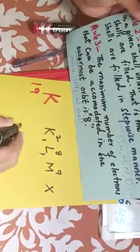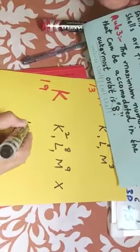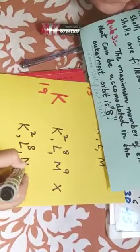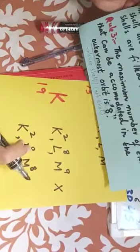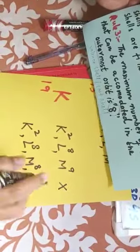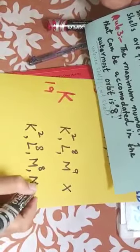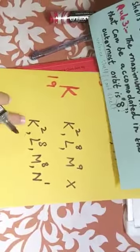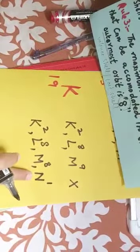So what will be the correct configuration? You may write configuration like K2, then L8, then M8. 8 plus 8 is 16, 17, 18, 1 electron left. So electron will jump into another shell and another shell is 1. So now this is first shell, second shell, third shell, fourth shell.